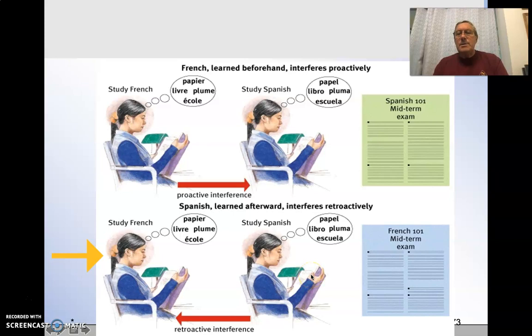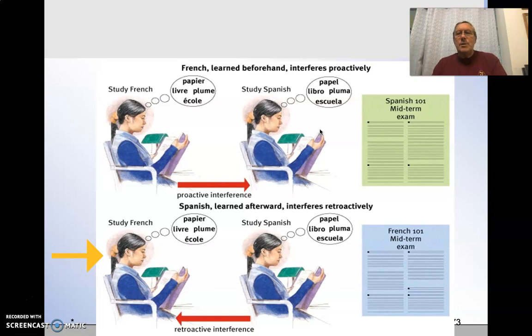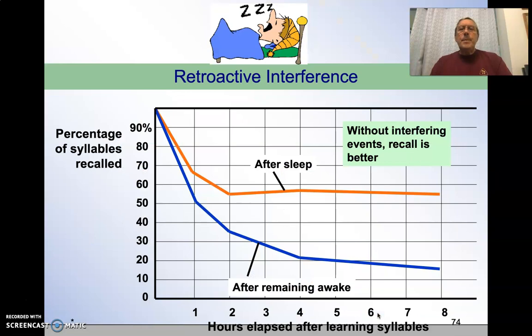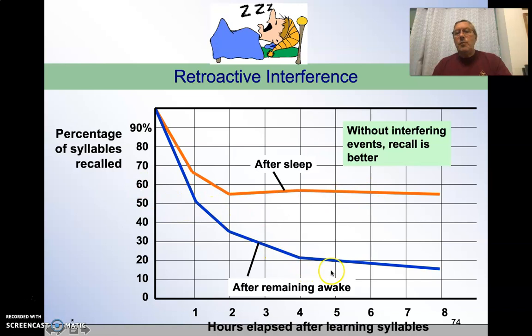So that tells us that it's important not to study similar subjects right after each other. If I'm going to study French, then I should go to math and then Spanish, because I will have less proactive interference and less retroactive interference. Keep that in mind when you're studying. One of the things that research has found is that sleep causes the least retroactive interference. So if you've got a psych test on Tuesday, study it the last thing you do on Monday night and then go directly to bed, because your forgetting curve is much less after sleep than if you remain awake. That means even using your phone — don't lay down in bed and get on your phones. Study and then go to bed. You'll do much better.